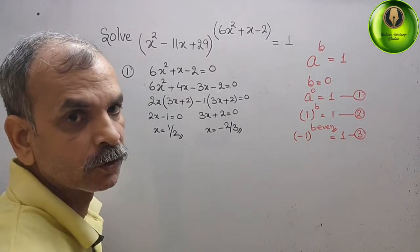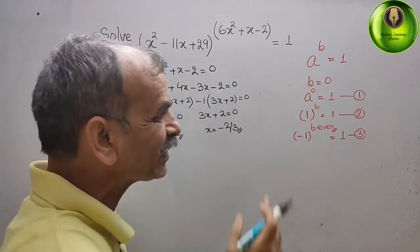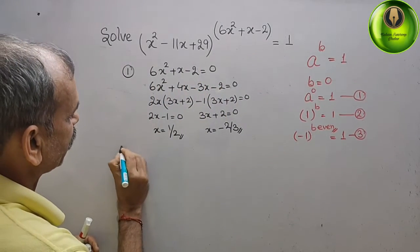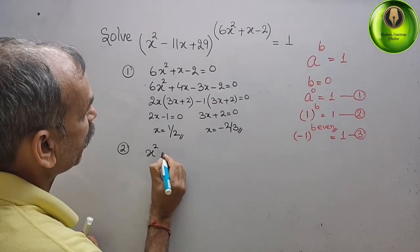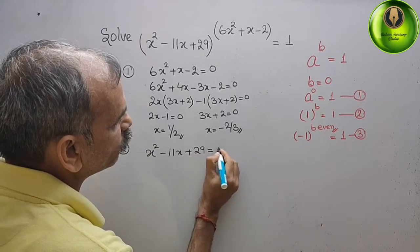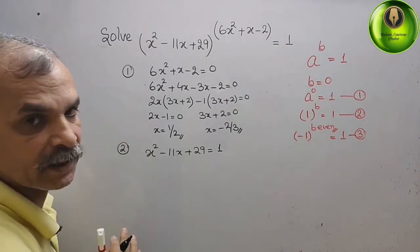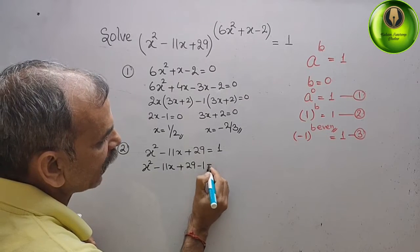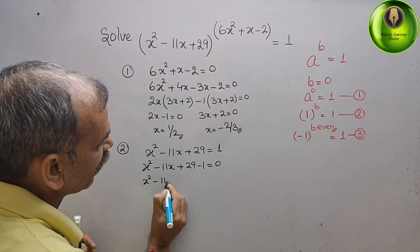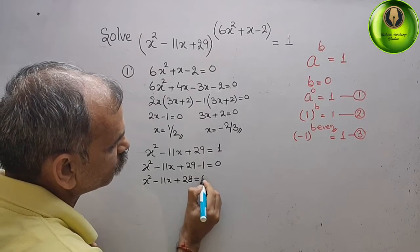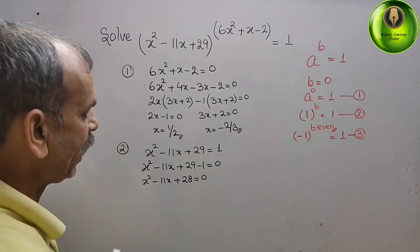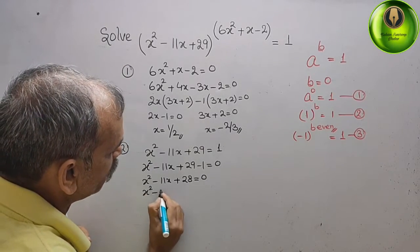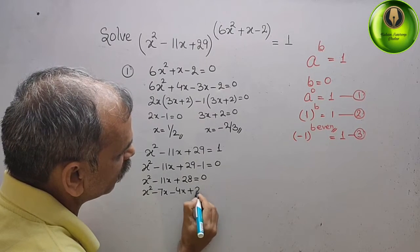Now for the second case, a = 1 means x² - 11x + 29 = 1. Bringing 1 to the left side: x² - 11x + 28 = 0. Since 28 = 7 × 4 and 7 + 4 = 11, we split: x² - 7x - 4x + 28 = 0.